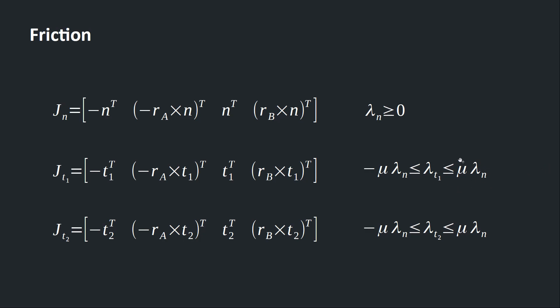But how we clamp the lambda in the tangent direction is a bit different from the lambda in the normal direction. Here, we actually want to clamp it based on how large the normal impulse is. This is how friction works. The maximum friction is proportional to the normal force. And then we multiply it with a coefficient of friction.